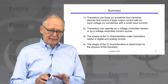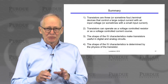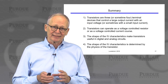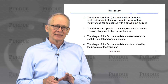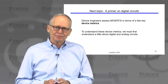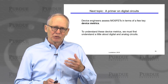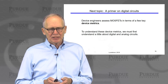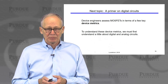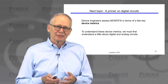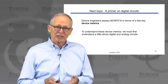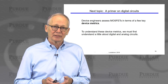What we're trying to get comfortable with in unit one is understanding the terminology and the shape of these IV characteristics. The shape and magnitude of the current is all controlled by the physics of what's going on inside the transistor — that's the real focus of this course, which we'll discuss in more detail in units two, three, four, and five. In the next lecture, we'll discuss device metrics, and to understand those we need to know a little about how digital and analog circuits operate.